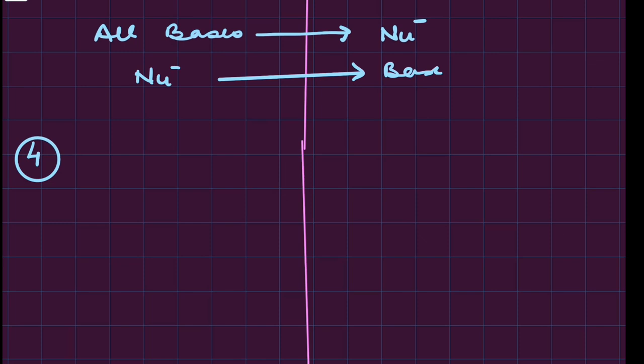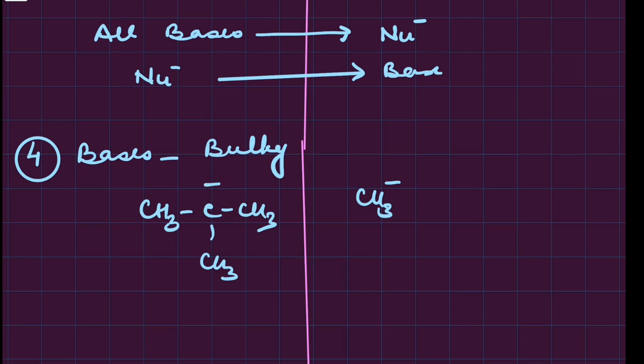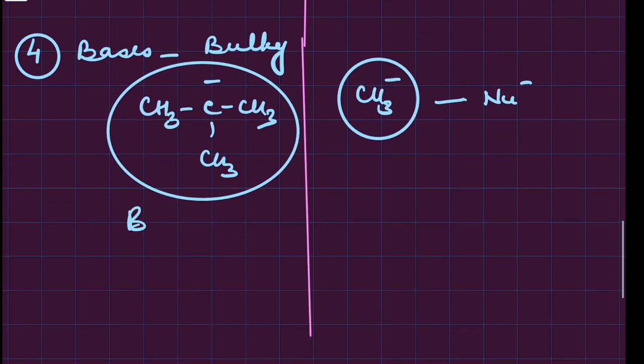In elimination reaction we need bases, and usually bases are bulky. So the less bulky one will have a better tendency to act as a nucleophile, and the bulky one will have a tendency to act as base. So the bulky base will undergo elimination and the small nucleophile will undergo substitution.